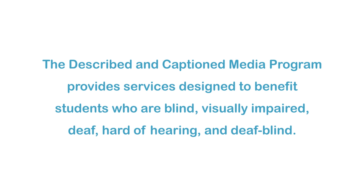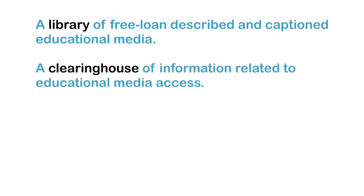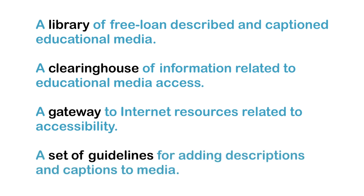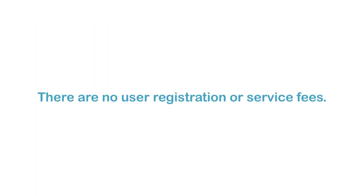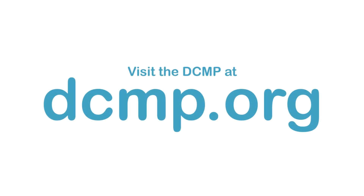The Described and Captioned Media Program provides services designed to benefit students who are visually impaired, deaf, hard of hearing, and deafblind. These services include a library of free loan described and captioned educational media, a clearinghouse of information related to educational media access, a gateway to internet resources related to accessibility, and a set of guidelines for adding descriptions and captions to media. There are no user registration or service fees. Visit the DCMP at DCMP.org.